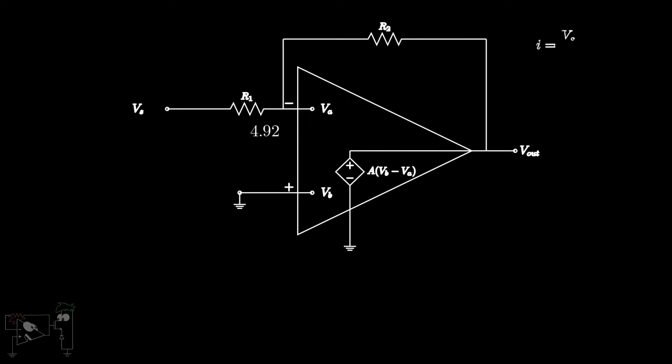So this current I will be Vs minus VA by R1. The voltage VA appearing at the inverting input gives rise to a voltage difference across the amplifier inputs, that is Vb minus VA. That is, negative VA. The amplifier amplifies this and a voltage of AVA appears at the output, and a current flows through the circuit.